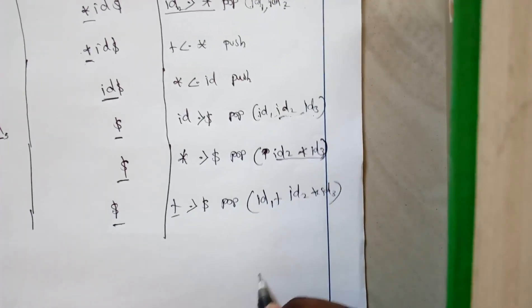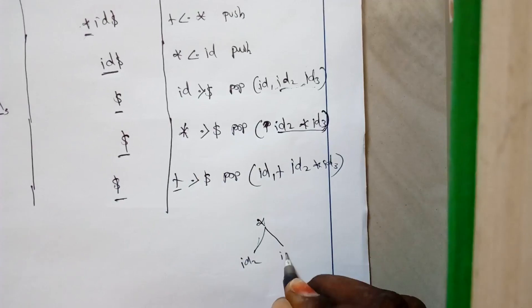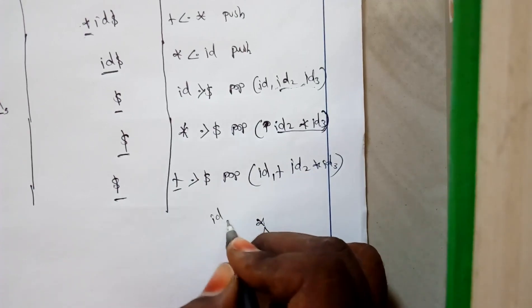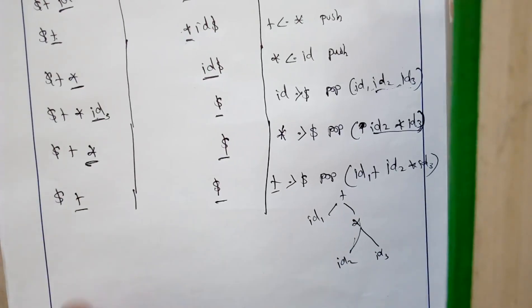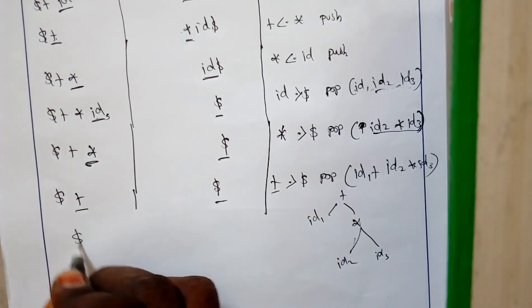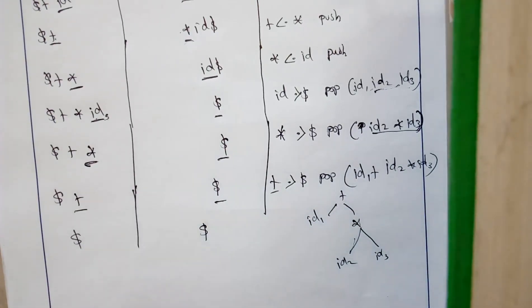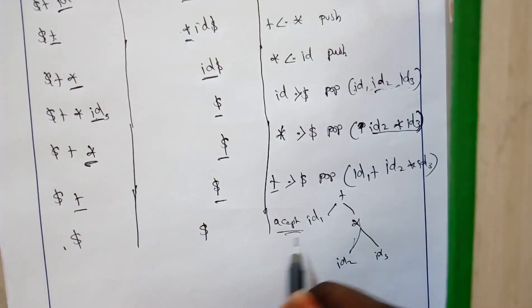Dollar plus compared with dollar — plus has a greater precedence over dollar, so we pop again. We had id2 and id3 already operated, so we pop plus and perform id1 plus (id2 star id3). While making the parse tree, it becomes plus with id1 and the star subtree. Now the stack has only dollar and the input has only dollar, so the dollar-dollar condition gives us an accepting criteria.